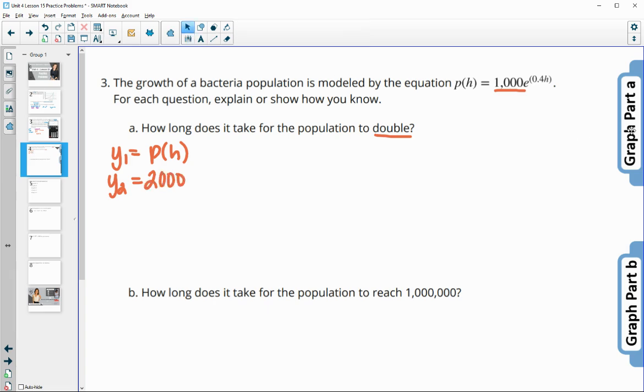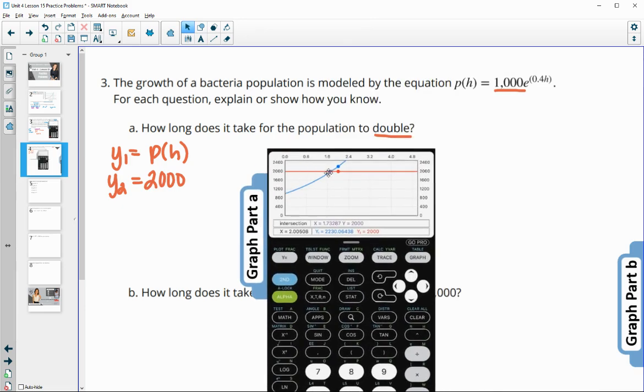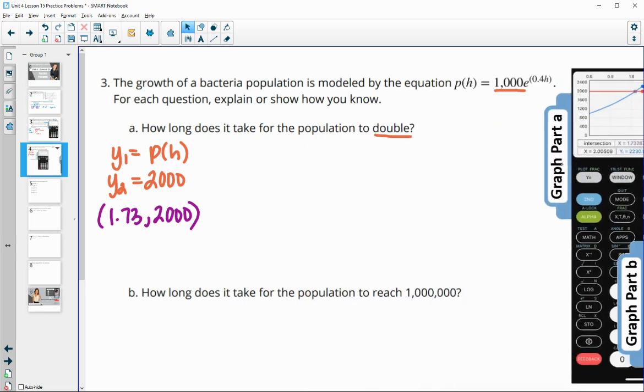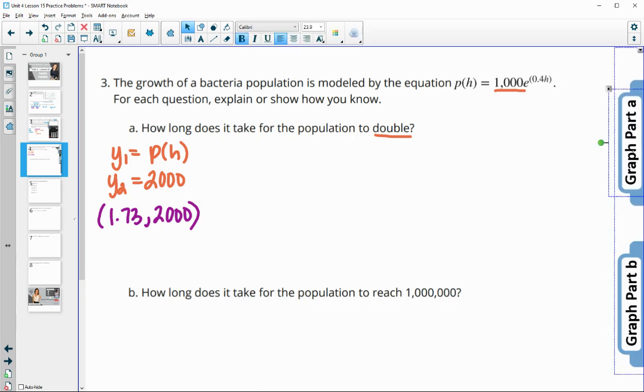And then you can check where they intersect. So I've done that here. So I plotted 2,000 and I plotted the function and then they came up with the intersection. And so the intersection point here is 1.73, 2,000. So this is telling us that after 1.73 hours or about an hour and three quarters, this population is going to double or be at 2,000. So that's one way you could do it.